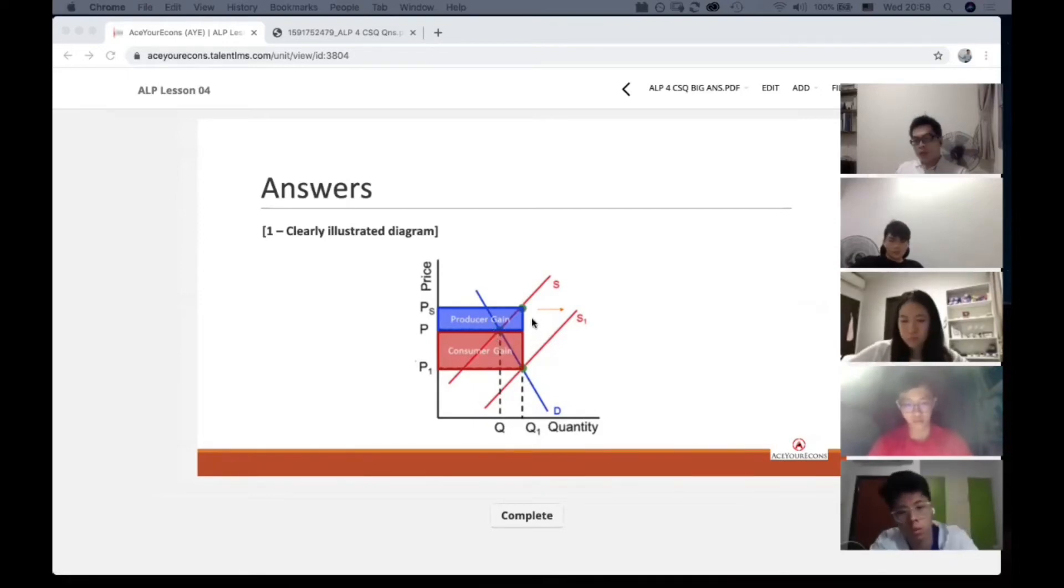And you can see that as a result of an increase in subsidy, I want you to observe this wedge here, or this gap here. You can see that at Q1, on your earlier supply curve, you can see that the producer will receive PX.